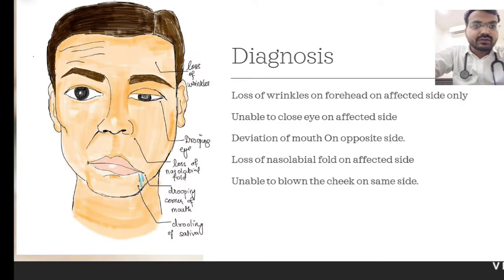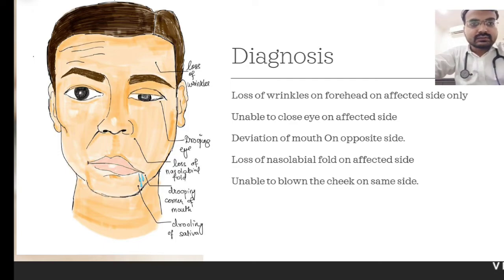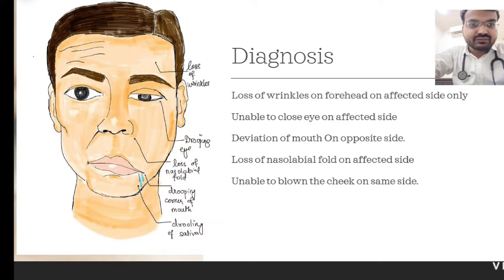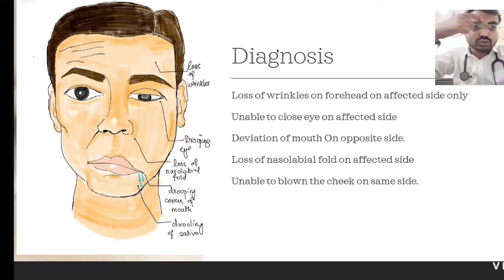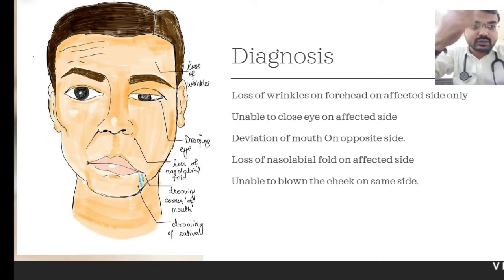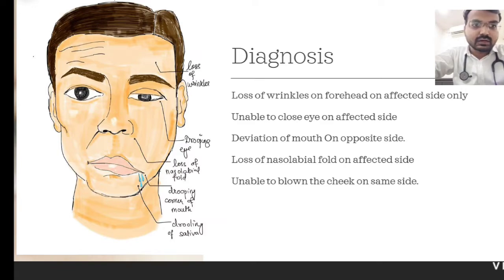First of all, how to diagnose a case of Bell's palsy? There are a few signs which are the typical findings of Bell's palsy. First of all, on the forehead, there is a loss of wrinkles on the typical affected side only. On the opposite side it is present, but it is absent on the affected side.